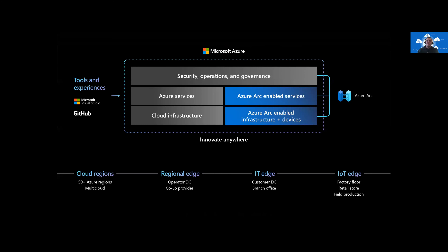Azure Arc is a bridge that extends Azure platforms so you can build applications and services with the flexibility to run across data centers, edge, and multi-cloud. It provides a consistent development operations and security model for both new and existing applications. Use the same tools, same security and governance technologies to create and manage application resources. A subset of Azure services for application, data, and AI are available to use on both new and existing hardware, virtualization, Kubernetes platforms, IoT devices, and integrated systems. Our goal is to simplify the complexity you face when building applications across cloud and edge, by standardizing the way applications are built, deployed, and managed with a common set of tools and experiences.